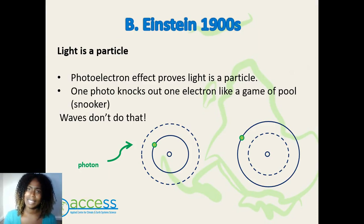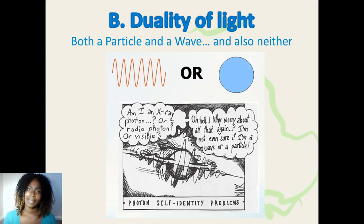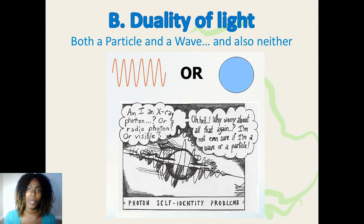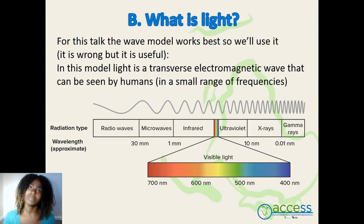Einstein, a hundred years later, discovered that light is a particle. He proved it using the photoelectric effect, in which photons knock off one another — the same as playing pool. We see light as a duality: it has to be a particle and a wave, or neither. Photons are tiny and exist in a quantum world, not as a particle nor a wave — it is just modeled as a wave or a particle. For this talk, I will be using light as a wave model. This is wrong, but very useful — you will understand what I mean in the modeling talk.